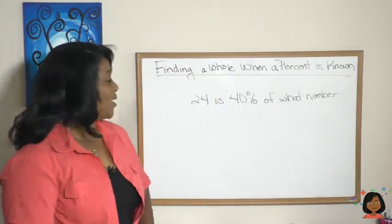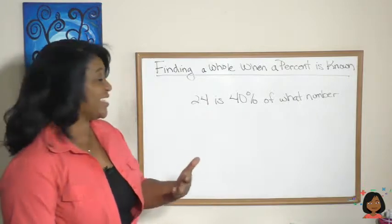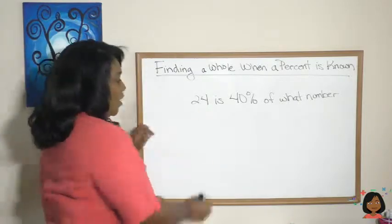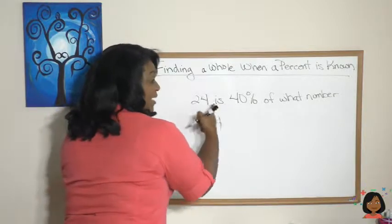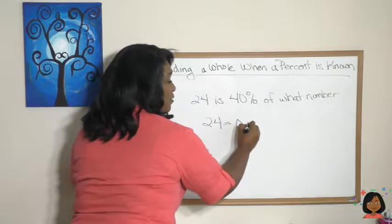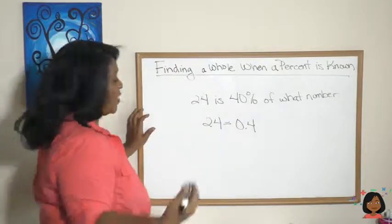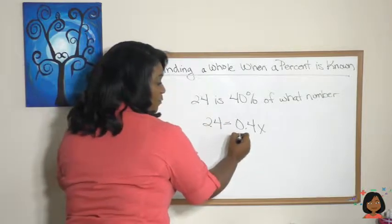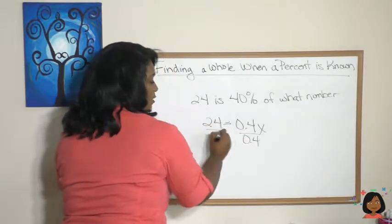You could also reverse the way you ask the question: 24 is 40% of what number? Still the same. So 24, 'is' is an equal sign, 40% goes to a decimal of what number, let's make it an x.